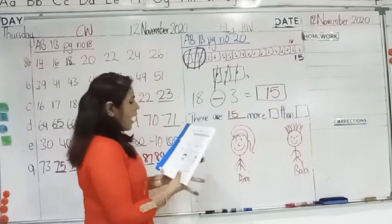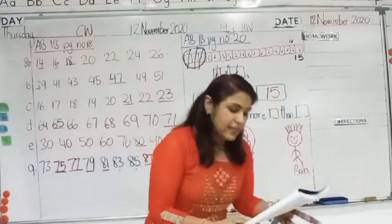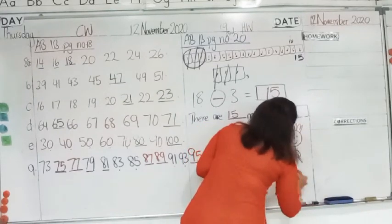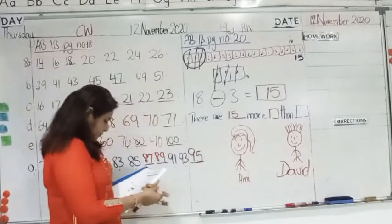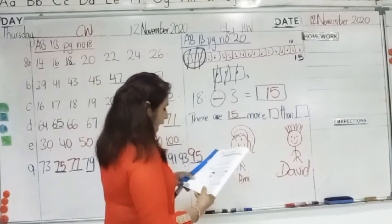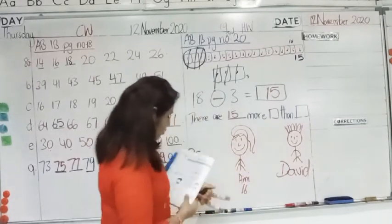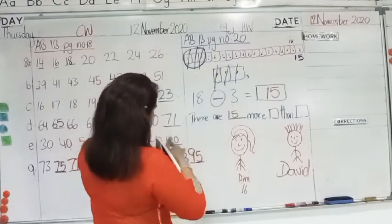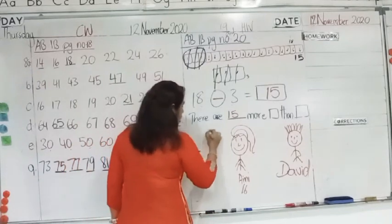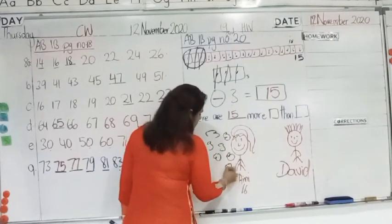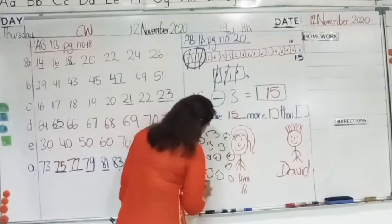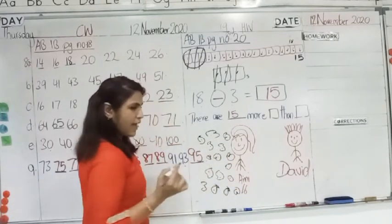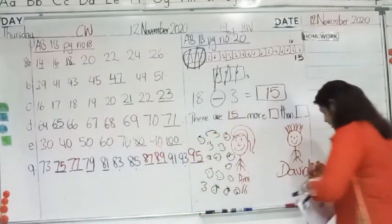Now, look at the bottom. How many fewer stickers does David have than Annie? So, there is Annie and here is David. Now, Annie says I have 16 stickers. So, I want you to draw 16 stickers. How many stickers? 1, 2, 3, 4, 5, 6, 7, 8, 9, 10, 11, 12, 13, 14, 15, 16. I double checked.